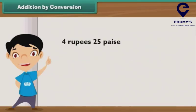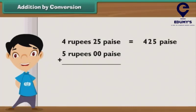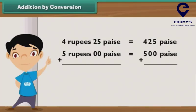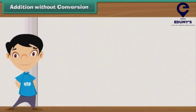We now add 4 rupees 25 paisae and 5 rupees. 4 rupees 25 paisae is equal to 425 paisae. 5 rupees is equal to 500 paisae. So, we add 425 and 500, which is equal to 925 paisae.